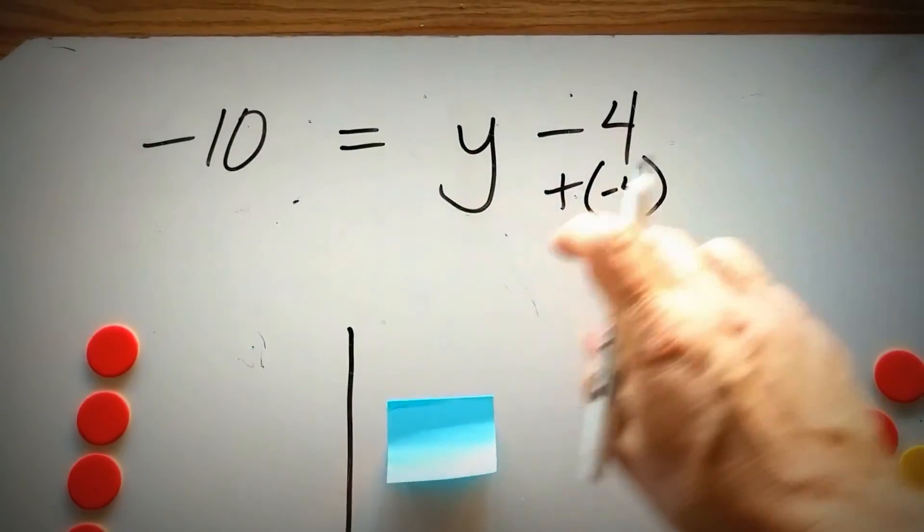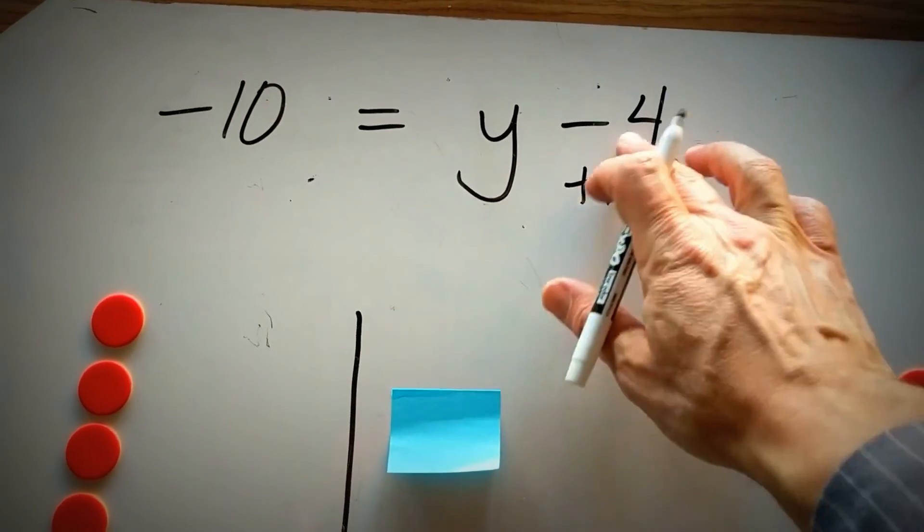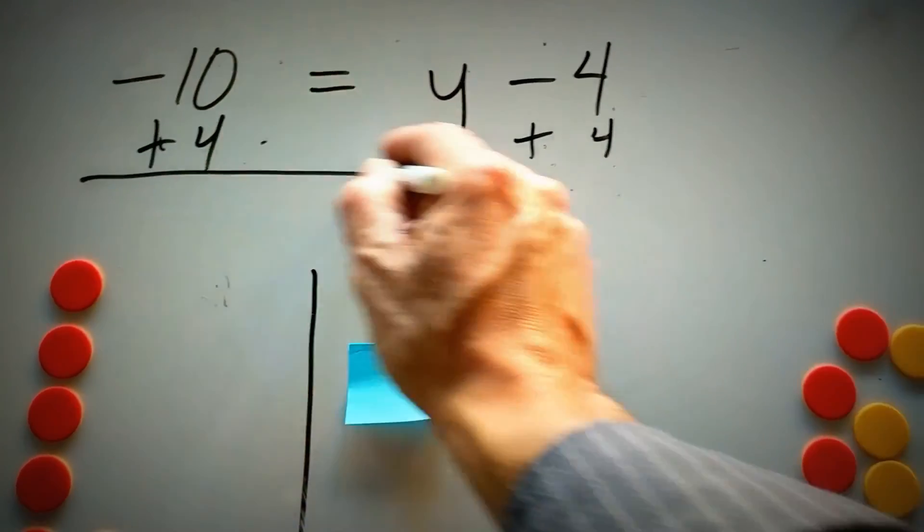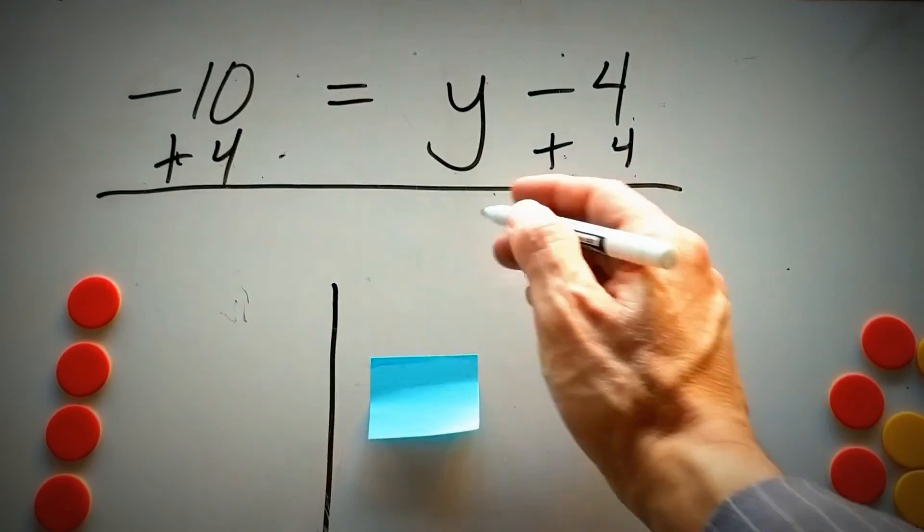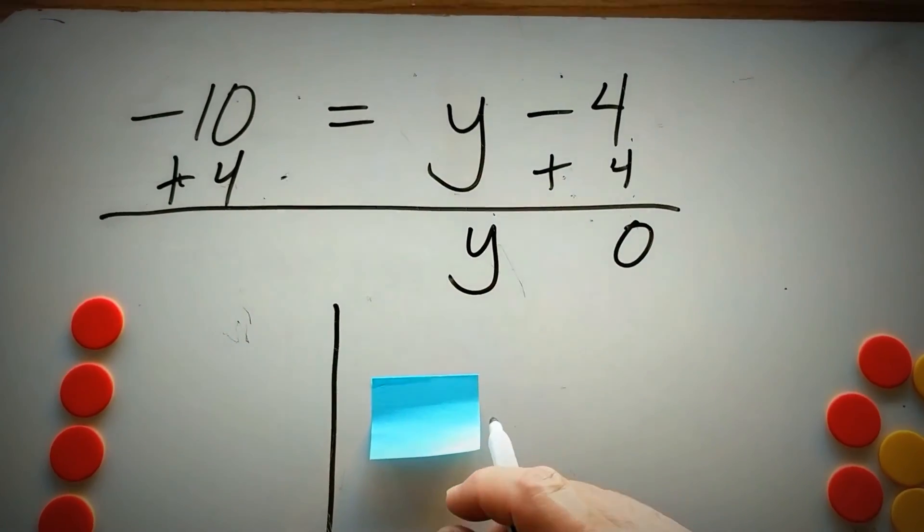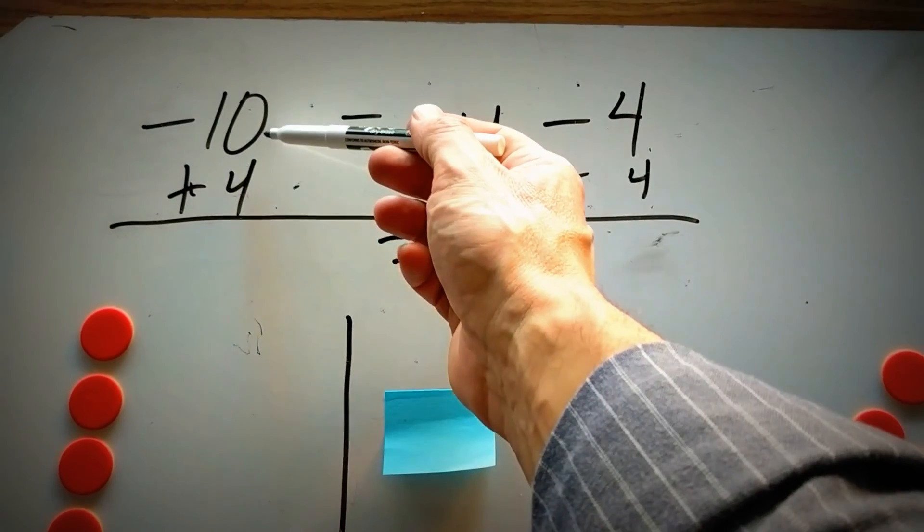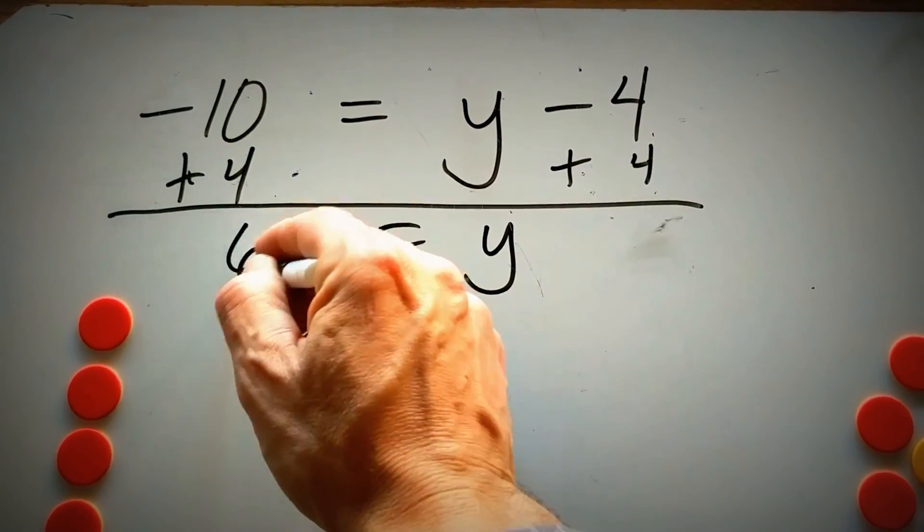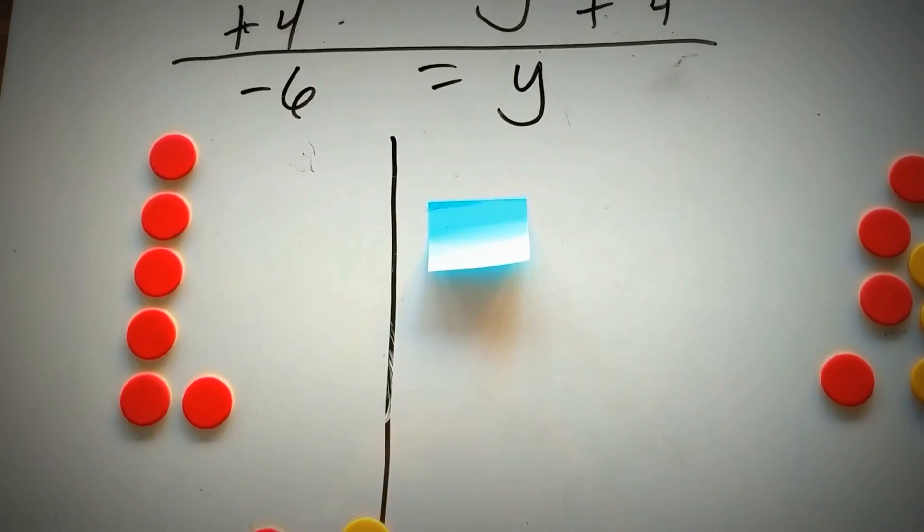Numerically, I could do it this way. I'm going to add 4 to both sides. Negative 4 plus 4 would be 0. So I'll be left with y on the right-hand side. And then on the left-hand side, negative 10 plus 4 is negative 6. Again, represented by the counters.